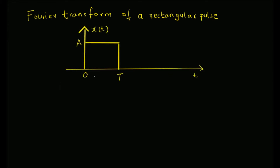Given the rectangular pulse which has a value a in the interval from 0 to T, and the rest of the function x(t) is 0. So this is a rectangular pulse, and we want to find the Fourier transform of this signal.